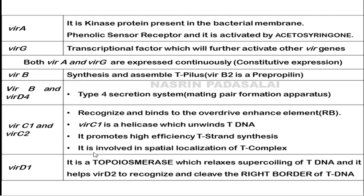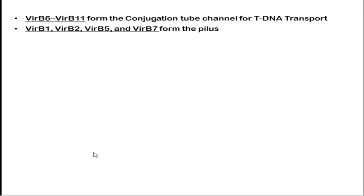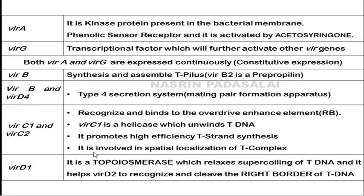The VirB operon has a total of 11 vir genes and is responsible for synthesizing and assembling the T-pilus. Specifically, VirB2 is responsible for producing a protein called pre-pilin, which is converted into a pilin protein responsible for forming the pilus in bacteria. VirB1, B2, B3, B5, and B7 are responsible for forming the pilus, and VirB6 to B11 form the conjugation tube channel for T-DNA transport.